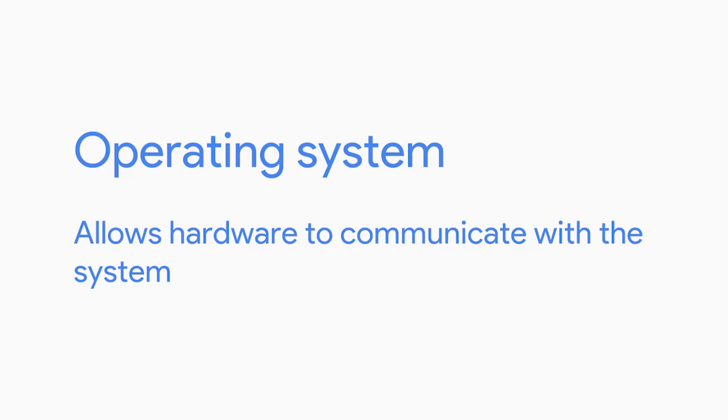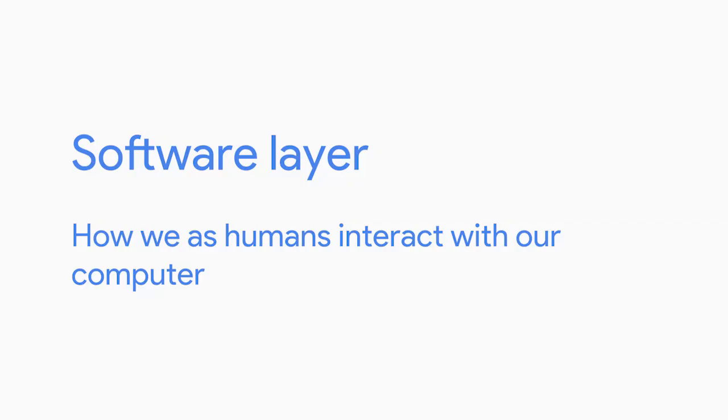The operating system allows hardware to communicate with the system. Hardware is created by many different manufacturers, and the operating system allows them to be used with our system regardless of where it came from. In the next few lessons you'll learn about the major operating systems we use today, and by the end you'll have a strong grasp on the major components of any operating system, like Android or Windows, and use that knowledge to navigate any operating system.